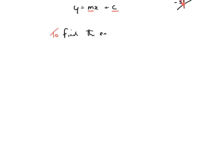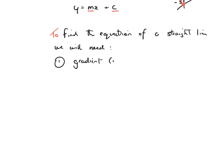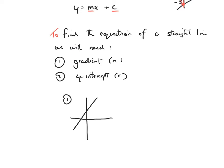To find the equation of a straight line, we will need two things: we'll need the gradient — that's m — and the second thing is we'll need the y-intercept — and that is c. So let's try a first example to see if we can find the equation of a straight line y equals mx plus c. There are two things we need: the gradient and the y-intercept, m and c.